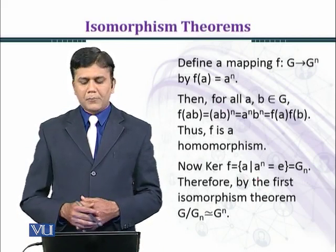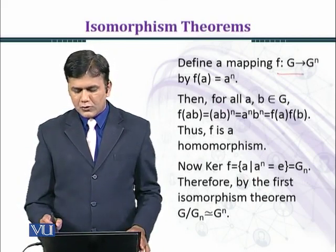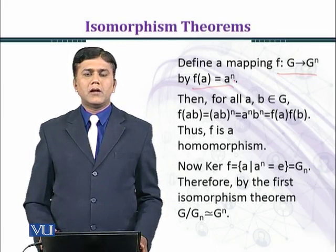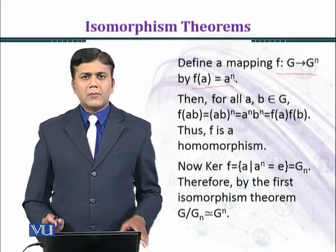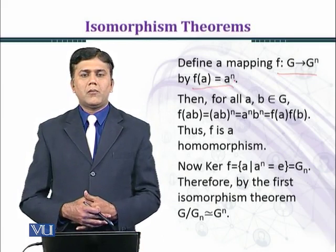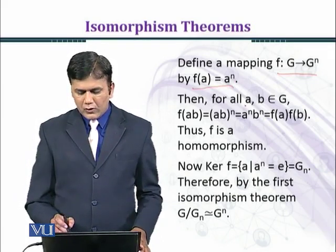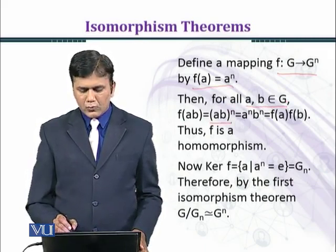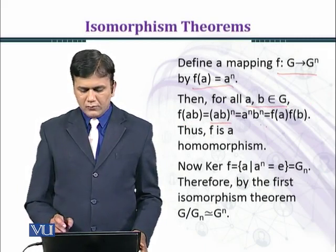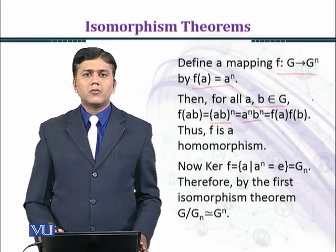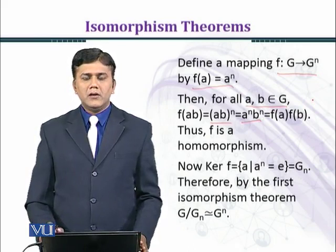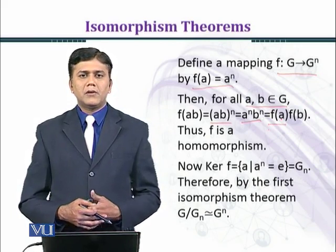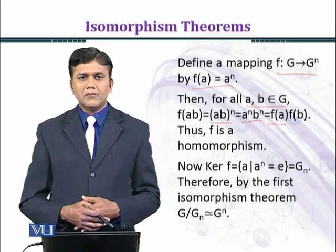Let's define a mapping from G to G^n by f(a) = a^n. Then for all a, b belonging to G, f(ab) = (ab)^n, which is equal to a^n · b^n, which equals f(a) · f(b). Therefore, f is a homomorphism.